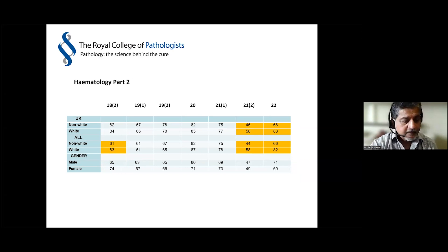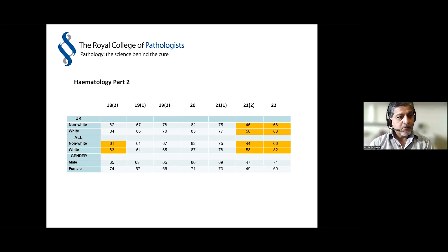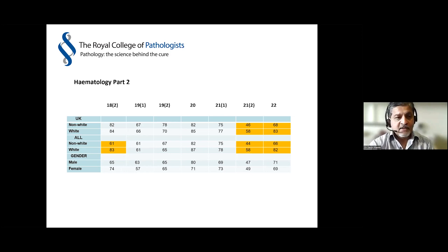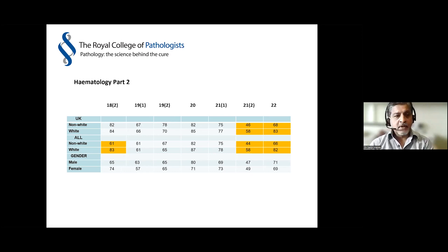Moving on to hematology Part 2, which is a practical exam with various components, there's not so much difference except in the last two sittings. I'm not sure why that is, because I don't think the exam has changed in the last two years, but something seems to be creeping in, with differences of up to about 16 percentage points. That's something that would be worth investigating.